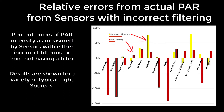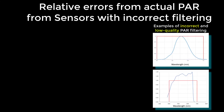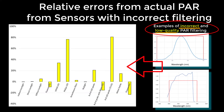The measurement error varies depending on what light source you're using. Even if you can get a sensor that has filtering, if it doesn't have a high-quality filter you'll still end up with errors in your PAR measurement — sometimes positive, sometimes negative — and it varies per light source. To avoid adverse effects on your lighting strategy, make sure you have a sensor with high-quality filters.